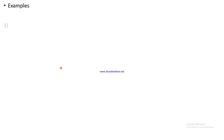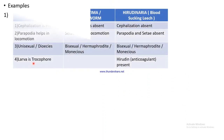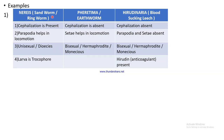The examples are Nereis (sandworm, also called ragworm), Pheretima (earthworm), and Hirudinaria (blood-sucking leech). In Nereis, cephalization is present; in Pheretima and Hirudinaria, cephalization is absent. In Nereis, parapodia help in locomotion; in Pheretima, setae help in locomotion; but in Hirudinaria, both parapodia and setae are absent.